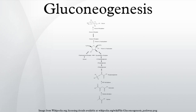The intestine uses mostly glutamine and glycerol. In all species, the formation of oxaloacetate from pyruvate and TCA cycle intermediates is restricted to the mitochondrion, and the enzymes that convert phosphoenolpyruvate to glucose are found in the cytosol. The location of the enzyme that links these two parts of gluconeogenesis — PEP carboxykinase — is variable by species. It can be found entirely within the mitochondria, entirely within the cytosol, or dispersed evenly between the two, as it is in humans. Transport of PEP across the mitochondrial membrane is accomplished by dedicated transport proteins; however, no such proteins exist for oxaloacetate. Therefore, in species that lack intramitochondrial PEP carboxykinase, oxaloacetate must be converted into malate or aspartate, exported from the mitochondrion, and converted back into oxaloacetate in order to allow gluconeogenesis to continue.